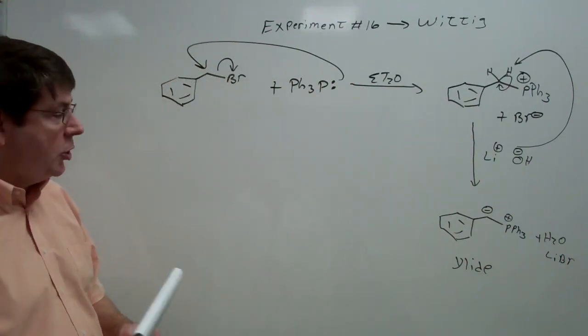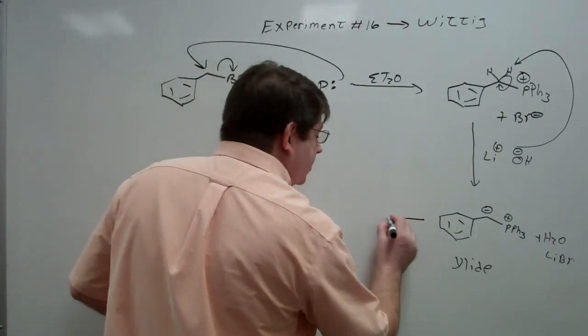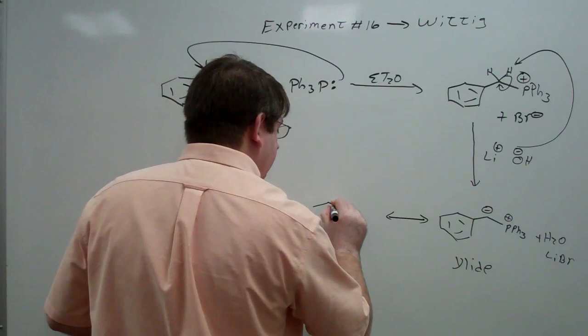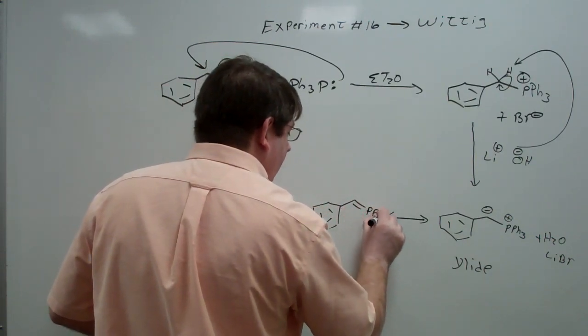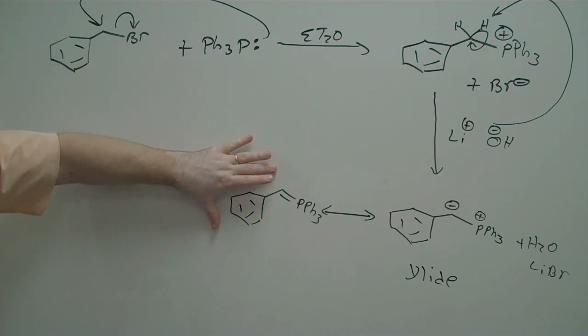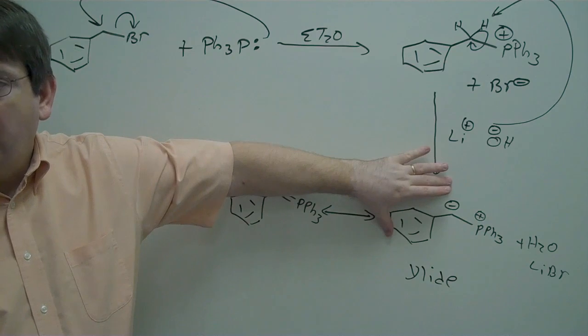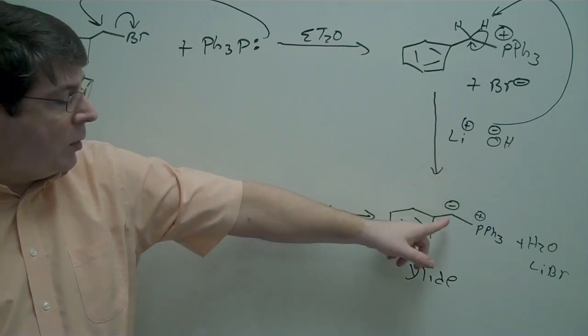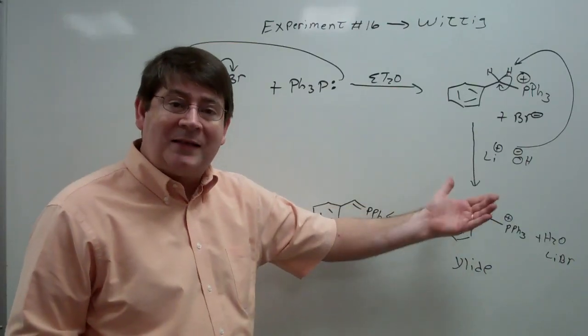This is technically known as an ylide. When you have adjacent charges that are opposite to one another like this, this is known as an ylide. But one can also draw this in what's known as the ylid form, where we have no formal positive charge, where we think of this as having a double bond between the phosphorus and the carbon. This is the most convenient way to draw it, simply because you don't have to go back in and put in those formal positive charges. However, this is probably the easiest way to view this reagent and how it's going to react. Since we have a negative charge on this carbon, we would expect this carbon to function as a good nucleophile. And that's in fact what happens.